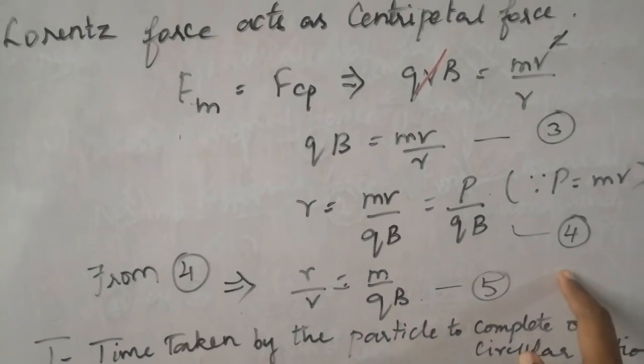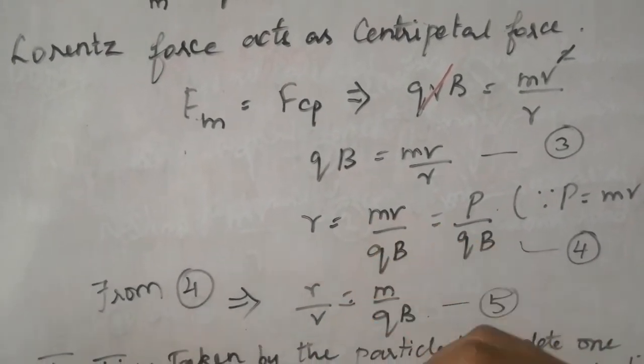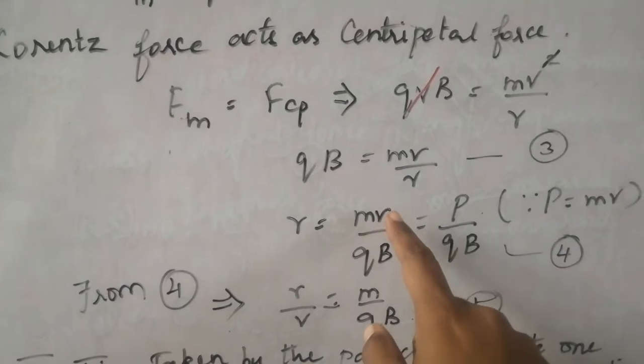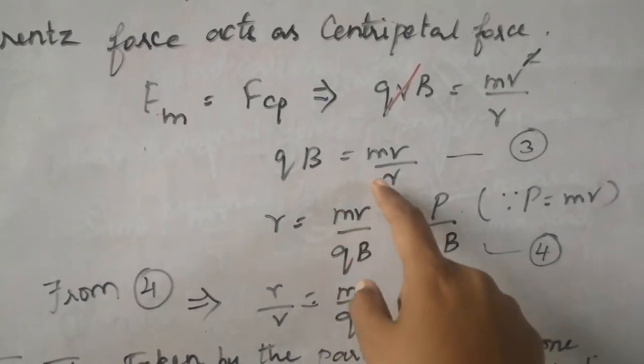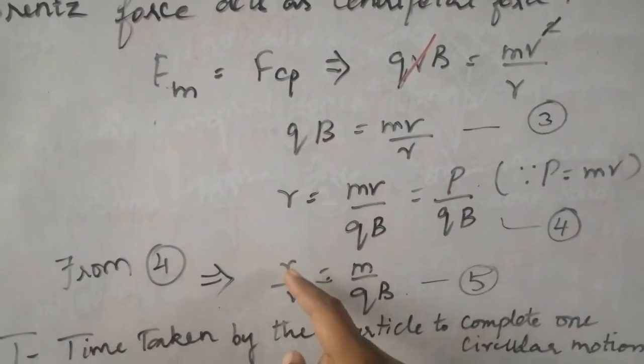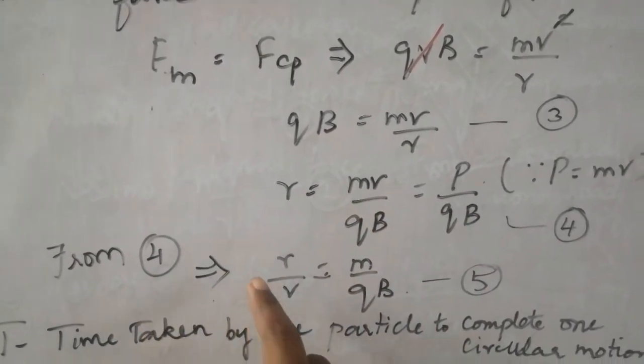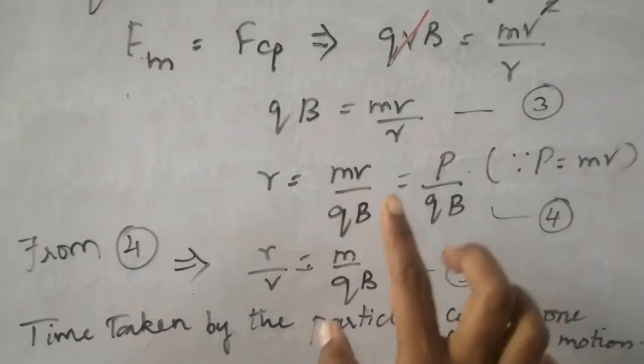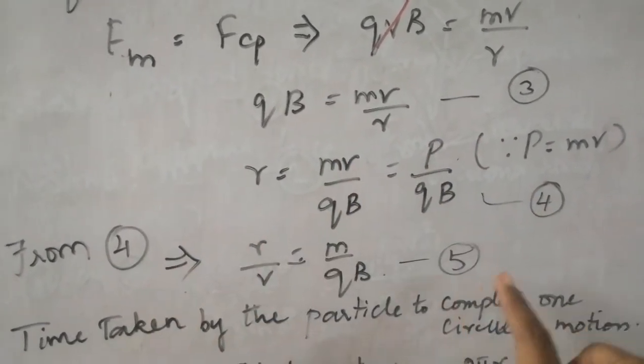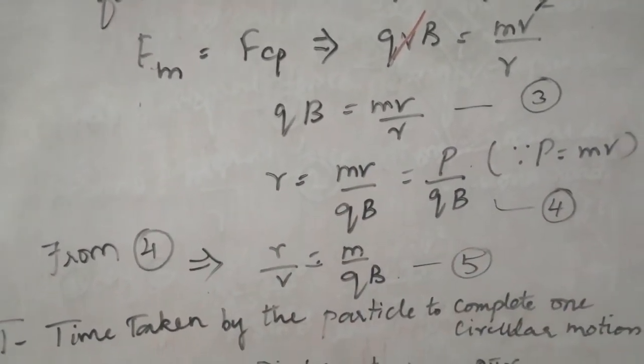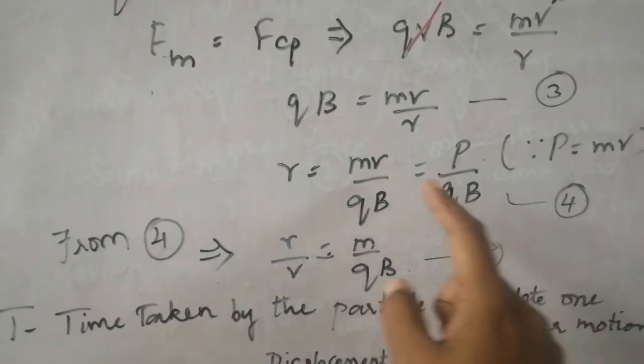From equation number 4, I am going to rewrite in another form. It will become as R by V equal to remaining M by QB. So this is equation number 5. This is for our derivation part.